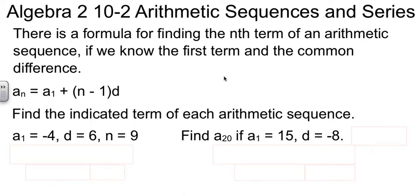This is Algebra 2, Chapter 10, Section 2, in which we will study arithmetic sequences and series. We talked about arithmetic sequences a little bit last time. Those were the ones where you added some constant value to get from one term to the next, and that constant was called the common difference.